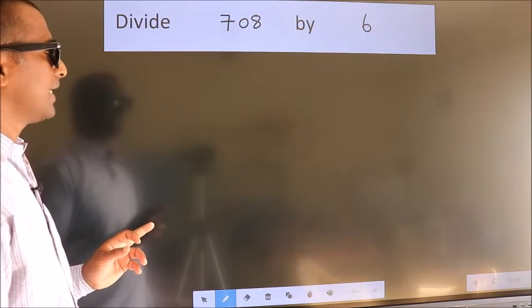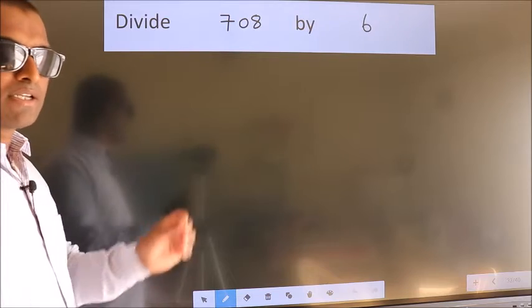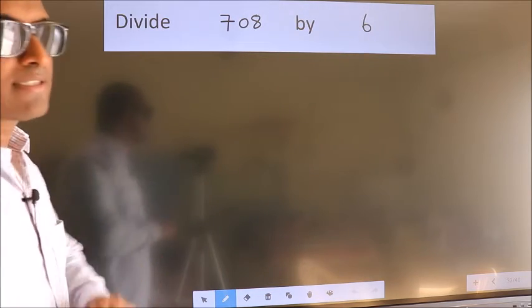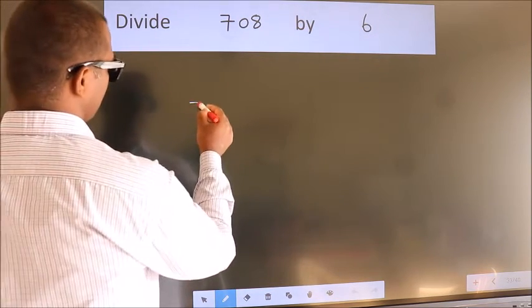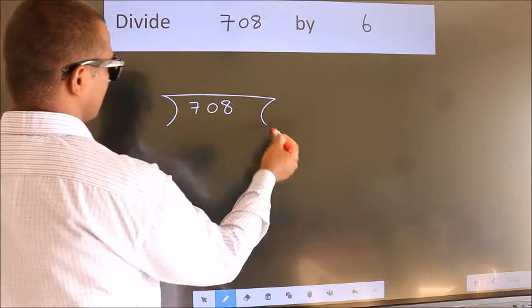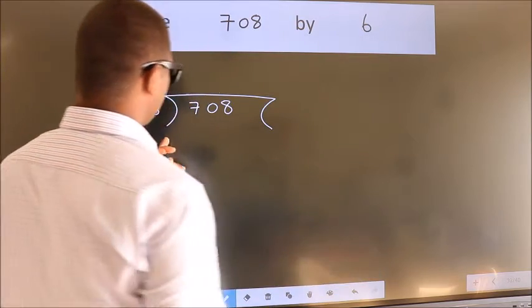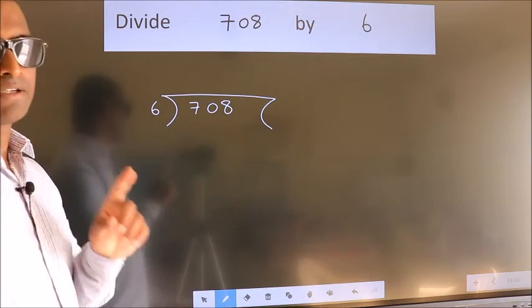Divide 708 by 6. To do this division, we should frame it in this way. 708 here, 6 here. This is your step 1.